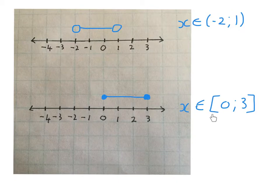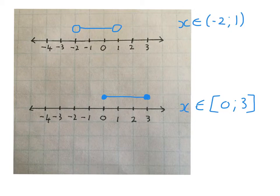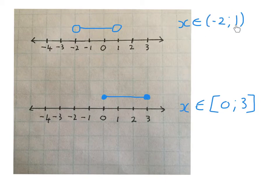The square bracket indicates including, so we include that number — that's why I put a black dot there, including the 3 because of the square bracket. We want all the numbers in between, that's why I drew a line. So: solid dot means square bracket, and empty dot means round bracket — think of it as half of a circle, like the round bracket shape.